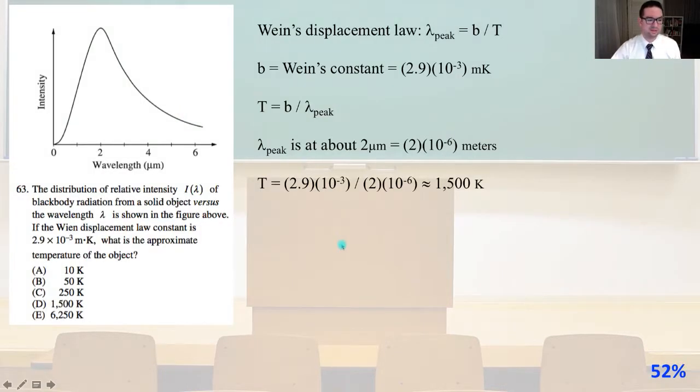Number 63. The distribution of relative intensity I(λ) of blackbody radiation from a solid object versus the wavelength λ is shown in the figure above. If Wien's displacement law constant is 2.9×10⁻³ meters·Kelvin, what is the approximate temperature of the object? Well, Wien's displacement law λ_peak equals b/T where b is Wien's constant which is 2.9×10⁻³. So T equals b divided by λ_peak where λ_peak is at about 2 micrometers.